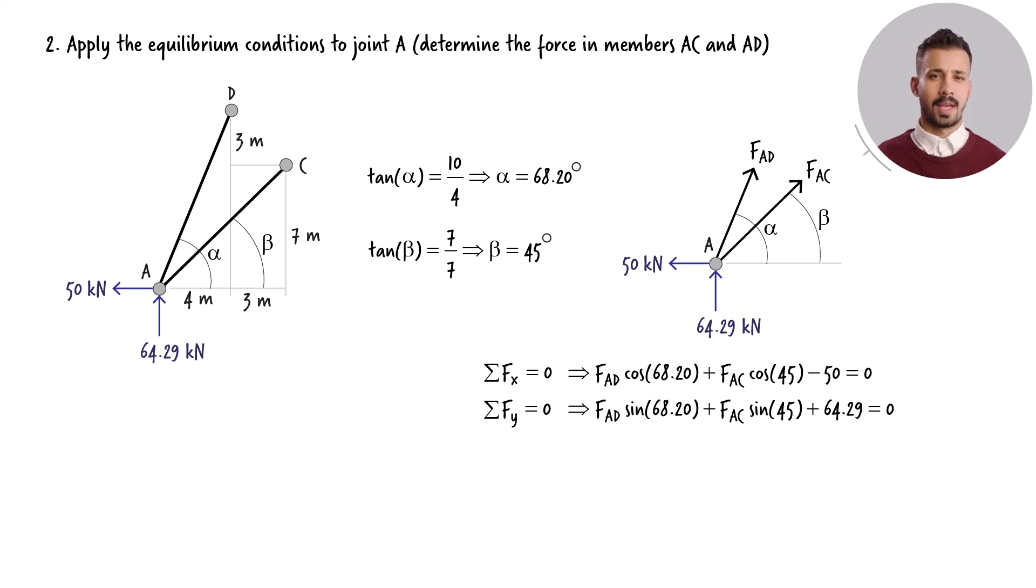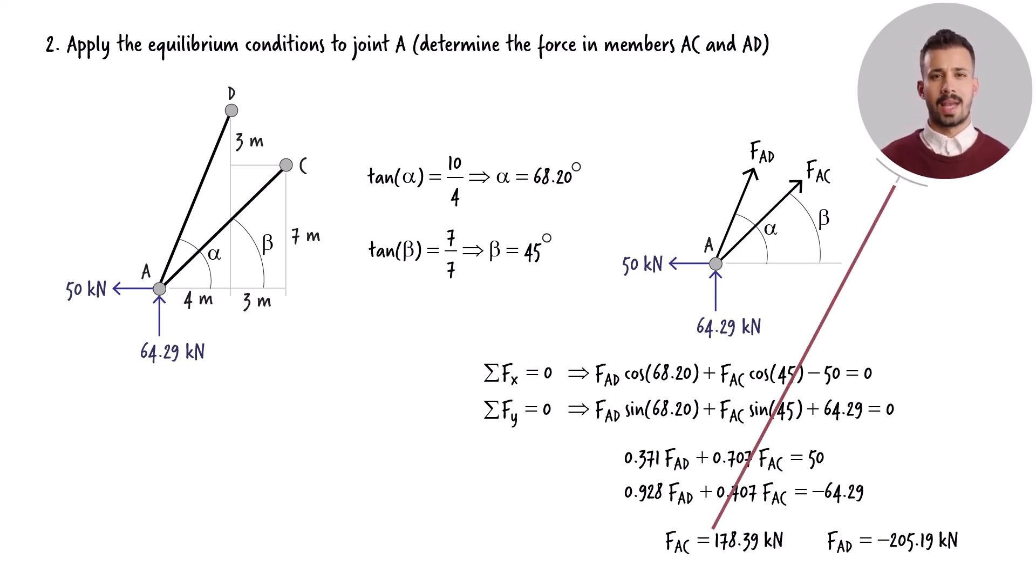We can simplify the two equations, then solve them for the two unknown forces. The sign associated with each force reveals if the member is experiencing tension or compression. A positive sign signifies that the member is under tension, while a negative sign indicates that the member is in compression.